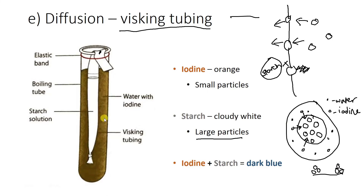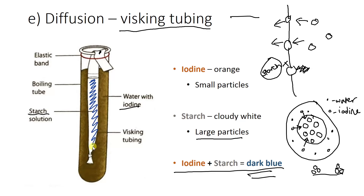When these two solutions mix together — when you have iodine and starch mixed together — you get a dark blue result. So the inside of that visking tubing would go a dark blue colour. And that's how you know that the reaction has happened, that iodine has come in, because it's reacting together to form a dark blue, almost black solution. So if that comes up in the exam, you know what that's about.